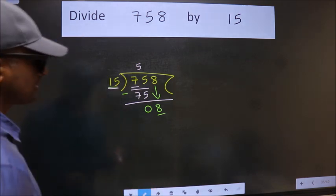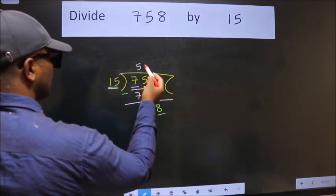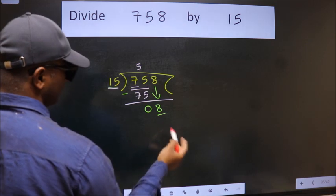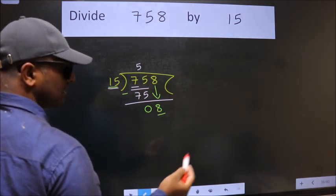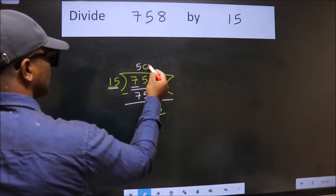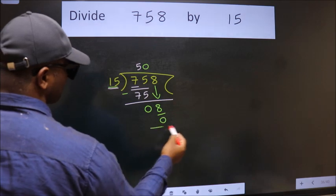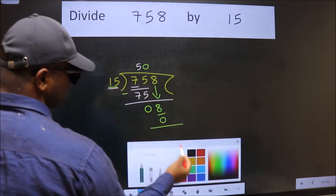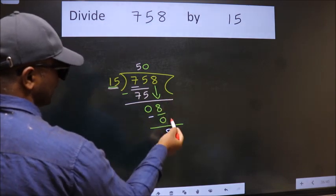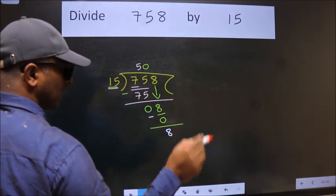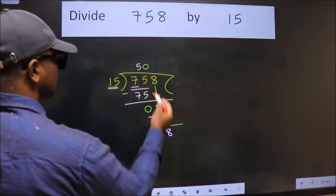Instead, what we should think of doing is which number should we take here. If I take one, we get 15, but 15 is larger than 8. So we take zero here. 15 into zero is zero. Now we subtract, we get 8. We did not bring any number down, and 8 is smaller than 15.